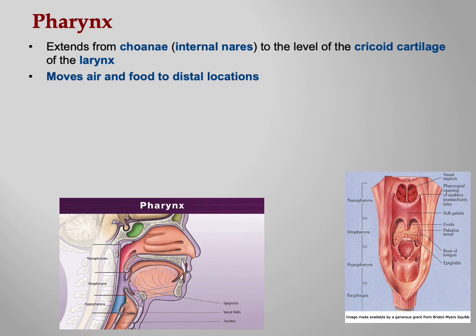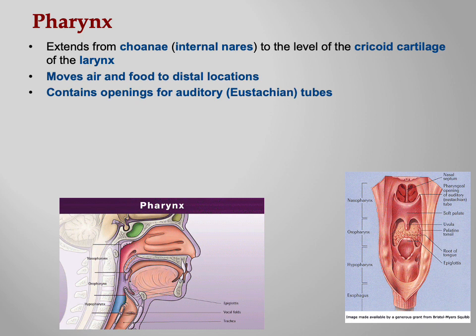The pharynx moves air and food to distal locations, so notice this is an overlap of function — it's really part of both the digestive system and the respiratory system. It also contains openings to your auditory tubes, formerly called the eustachian tubes, which go up to your middle ear. That's why little kids sometimes get a cold and the inflammation travels up the auditory tube, shutting off the middle ear and causing those horrible middle ear infections.